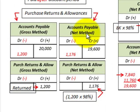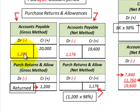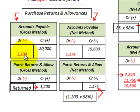Let's also look at purchase returns and allowances in relation to both methods. Say we returned $1,200 of the $20,000 worth of purchases back to the vendor. Under the gross method, we debit accounts payable for $1,200 at the gross amount and credit purchase returns and allowances on the income statement for $1,200.